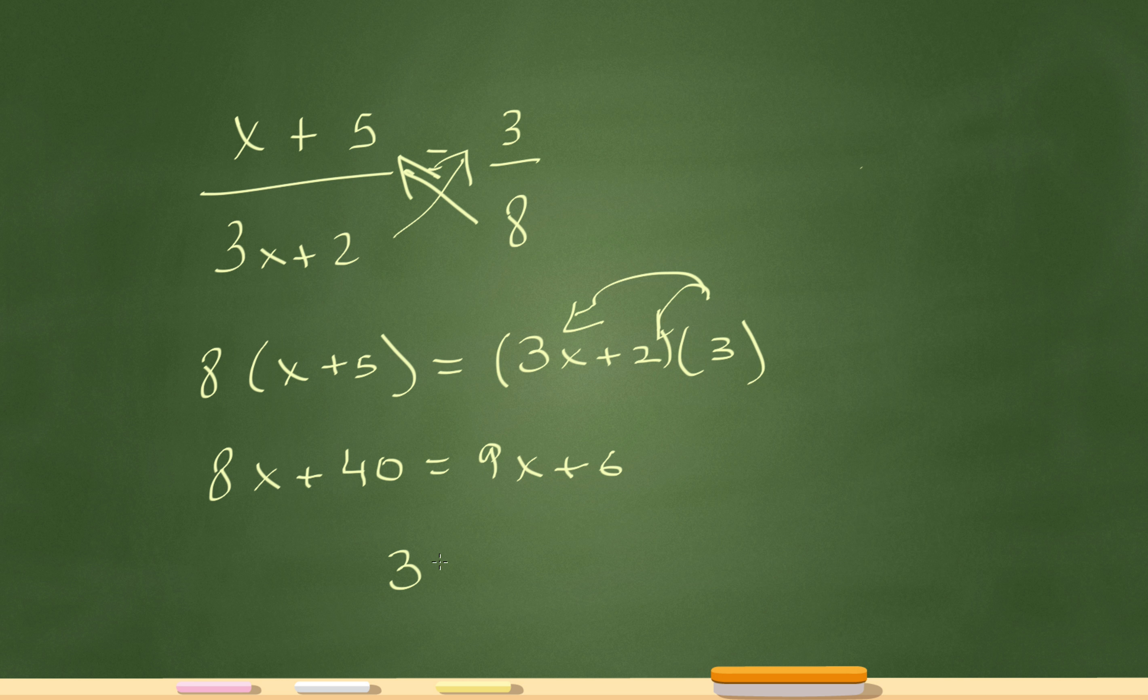So I'll have 40 minus 6 is 34 and so I'm bringing this to this side and then 9x or the 8x over here so that'll become x. So x equals 34.